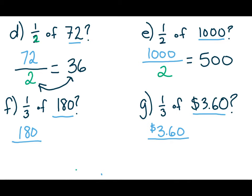If I were to take $180 and I were to cut that into three equal parts, then one third of 180 is 60. And finally, if I were to take $3.60 and I were to divide that into three equal parts, one third of that would be $1.20.